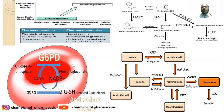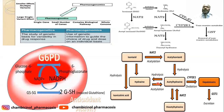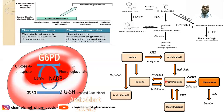Slow acetylators are those with deficiency of N-acetyltransferase 2 (NAT2), the enzyme responsible for acetylating isoniazid into acetylisoniazid for further metabolism and excretion. In slow acetylators, drug accumulation can lead to toxicity. Fast acetylators have the enzyme in large quantities, so the drug is metabolized and excreted rapidly without producing therapeutic benefit for the patient taking isoniazid.